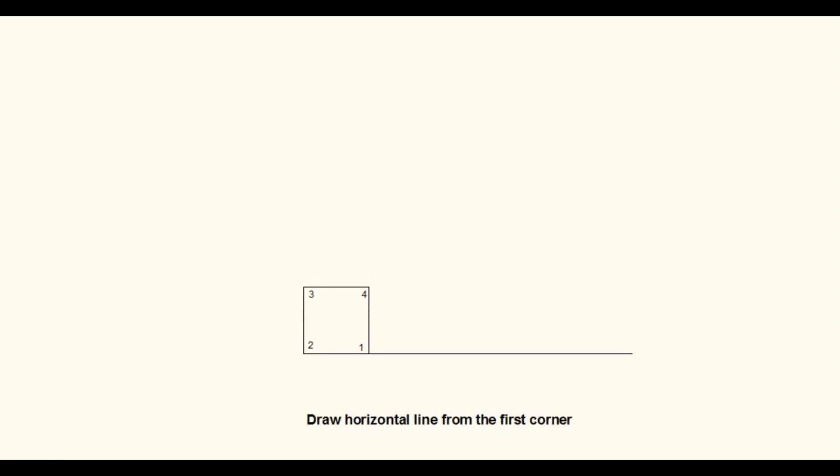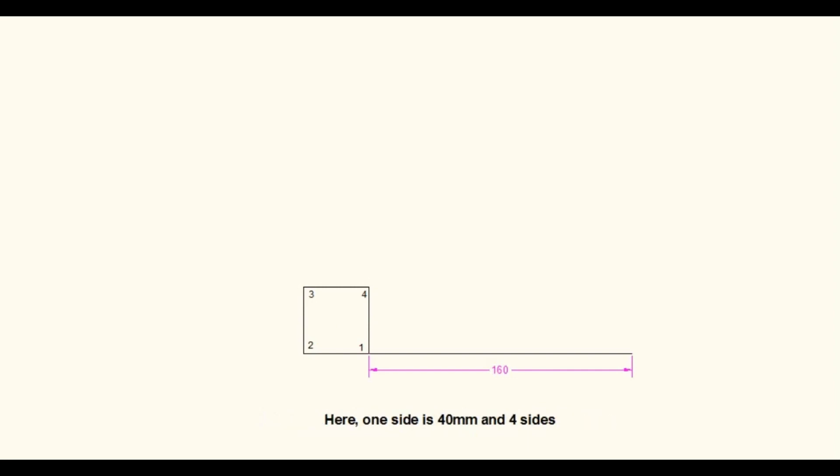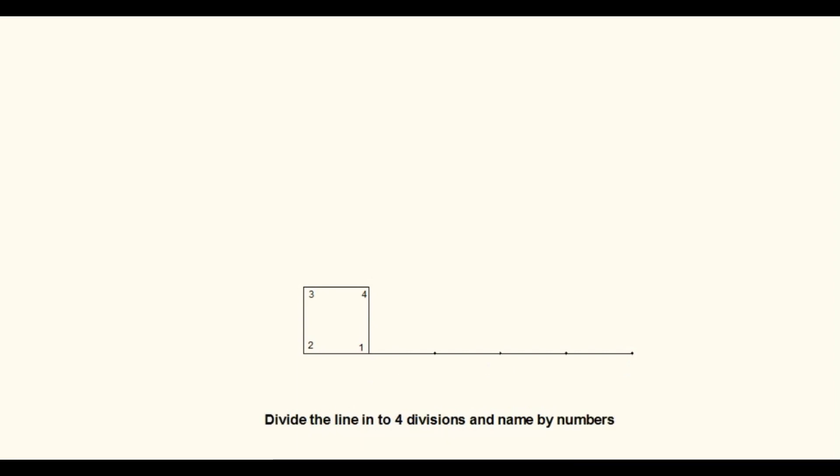Draw a horizontal line from the first corner of the square. The length of the line is equal to the perimeter of the square. One side of the square is taken as 40 mm, and the square has 4 sides. Therefore the perimeter is 40 times 4 equals 160 mm. Divide this horizontal line into 4 equal divisions and mark it with numbers.